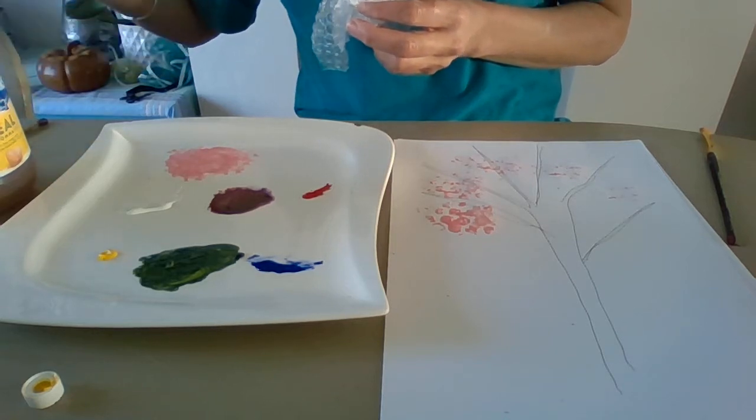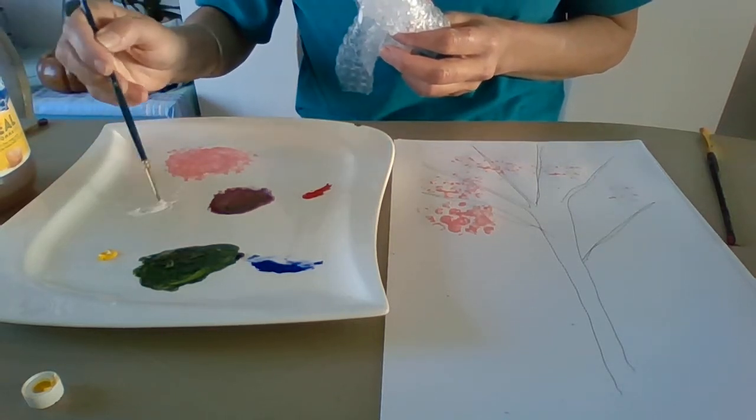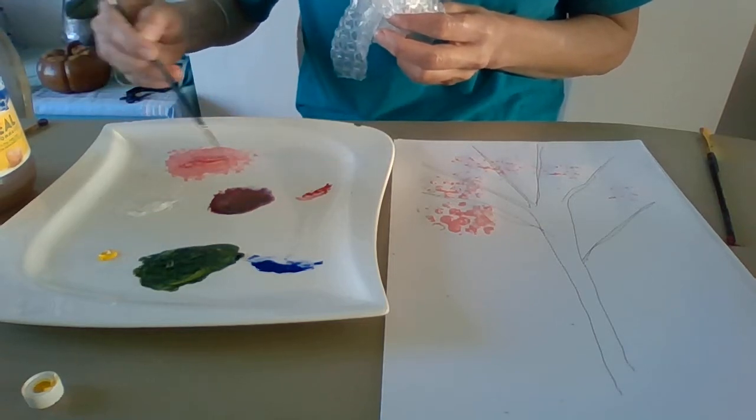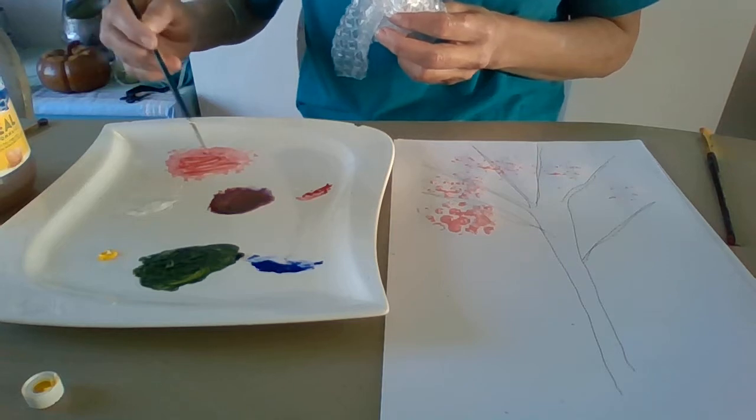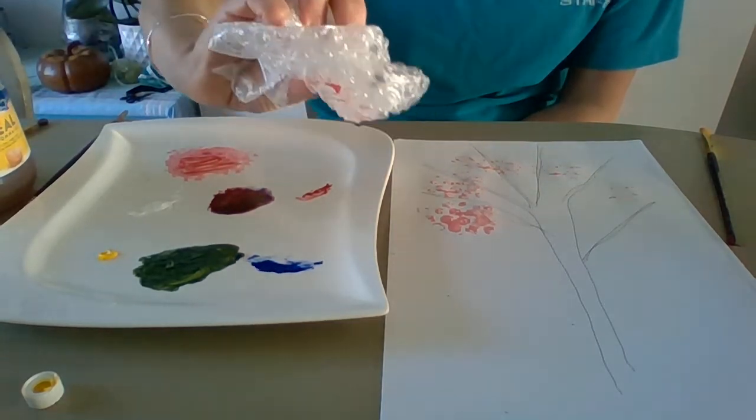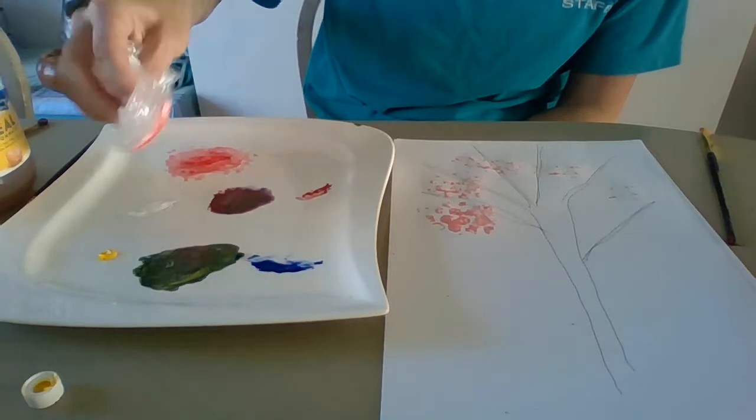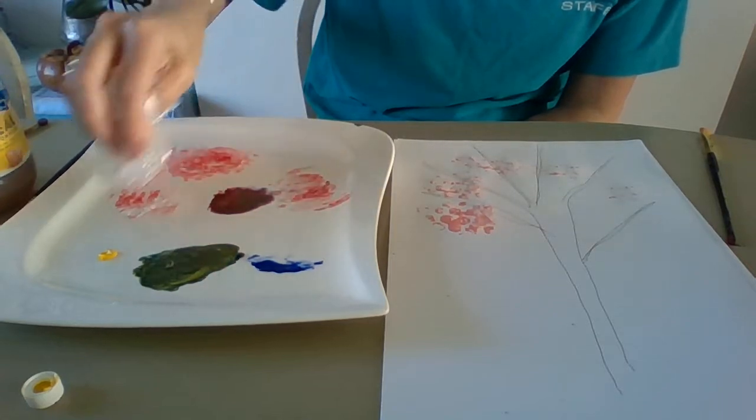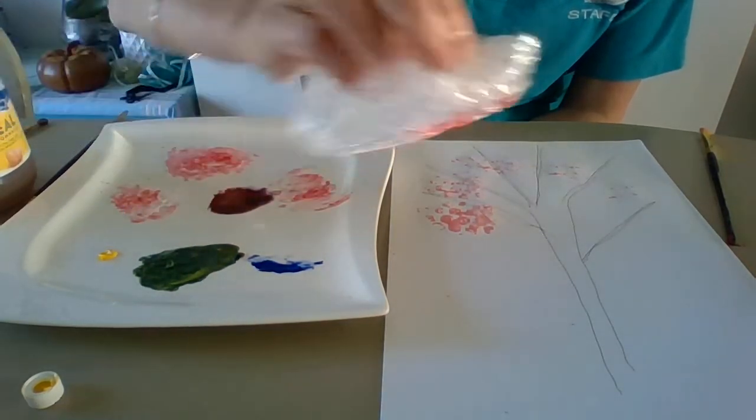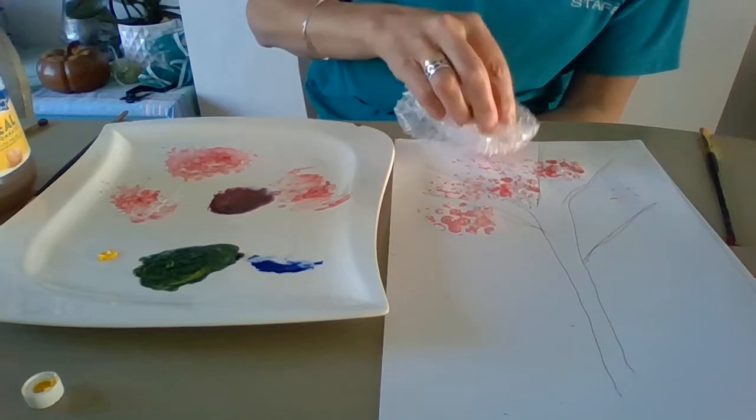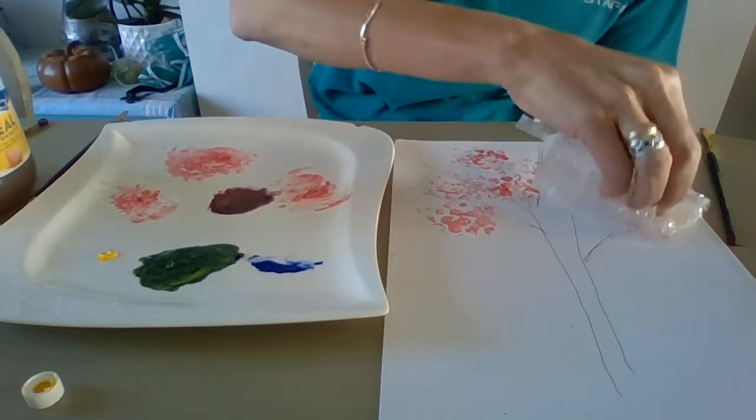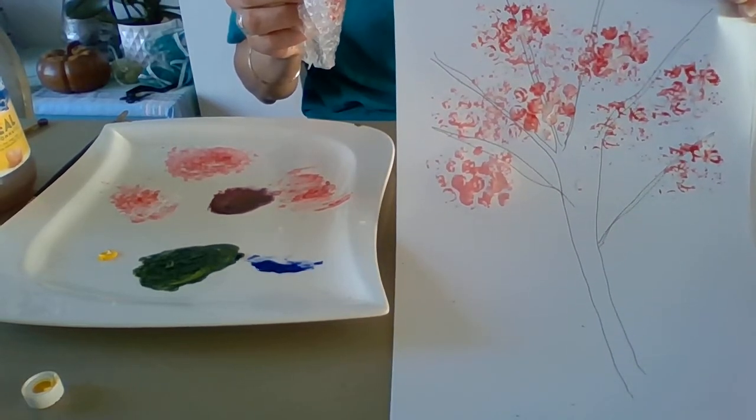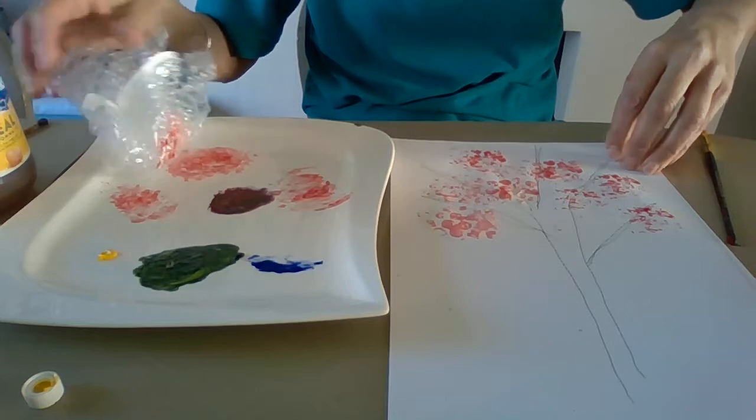The other thing I can do is have some of the white and some of this lovely pink and use my bubble wrap to go in the white and the pink and maybe even a little bit of the red like this. And then when I do my tree, I get dark pink, light pink and white. What do you think? That's one idea of what you could do.